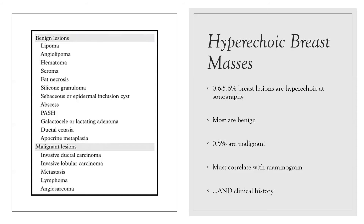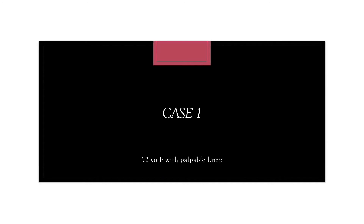There is a list of benign and malignant lesions that can be hyperechoic on ultrasound. Some of the more common benign ones are lipoma, hematoma, fat necrosis, and silicone granuloma in patients who have had implant rupture or free silicone injection. Malignant lesions, however, can also be hyperechoic, including invasive ductal and lobular carcinoma, metastasis, and lymphoma. We'll run through five cases as examples, covering diagnostic and management considerations.